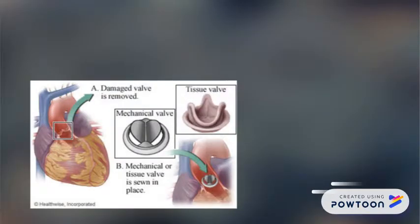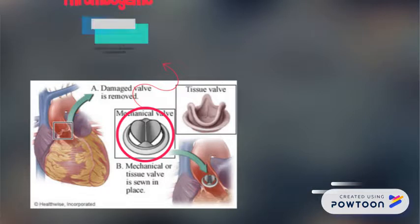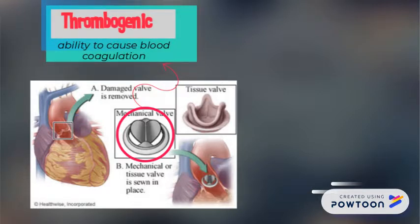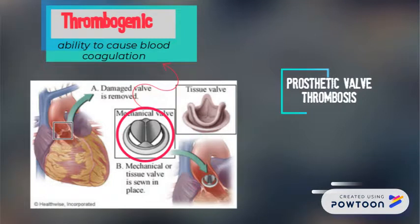Thromboembolic complications in patients on heart valve replacement can occur due to the properties of the mechanical artificial valve. This artificial valve is thrombogenic, meaning it can cause blood to coagulate, leading to prosthetic valve thrombosis. That is why people with a mechanical heart valve must take warfarin to prevent blood coagulation.